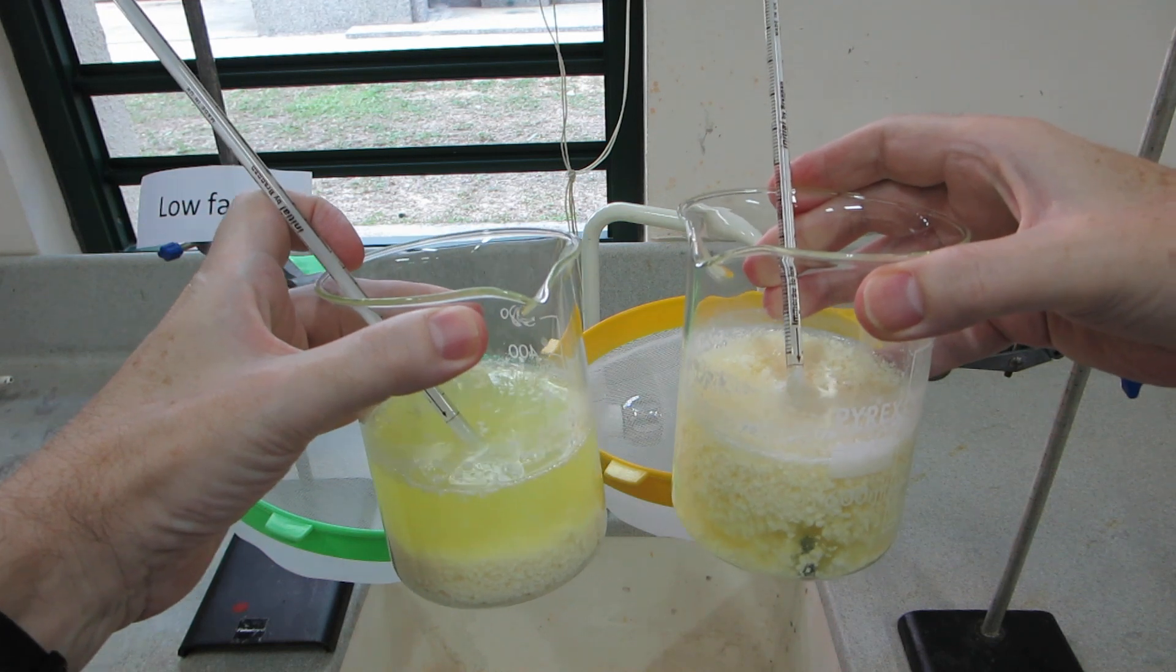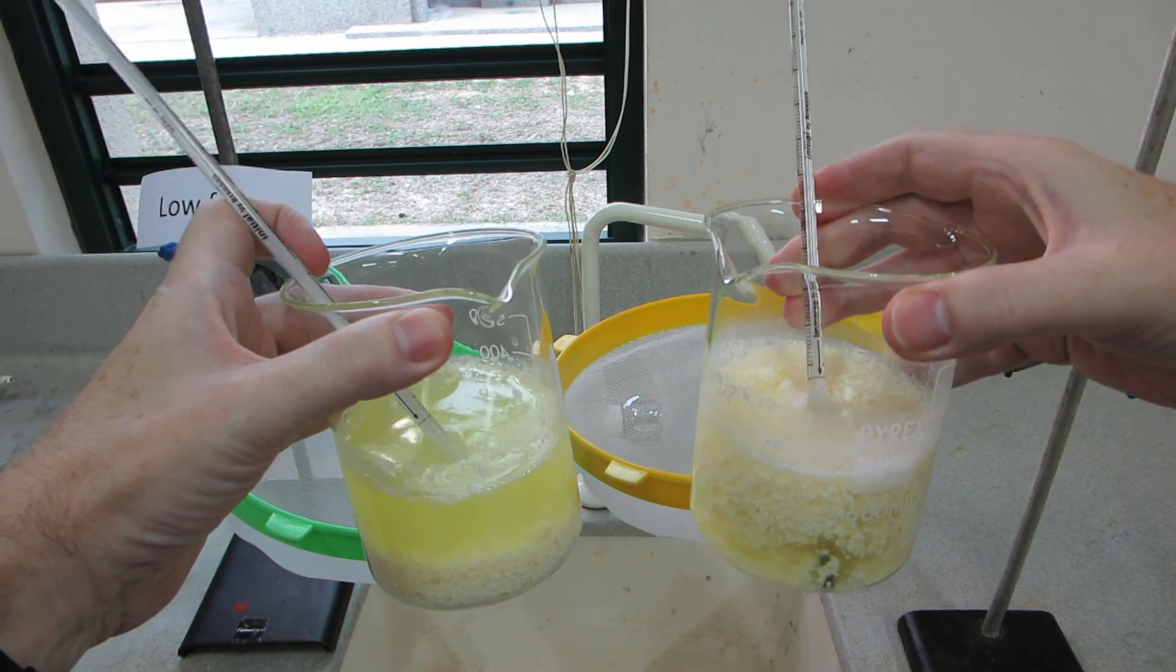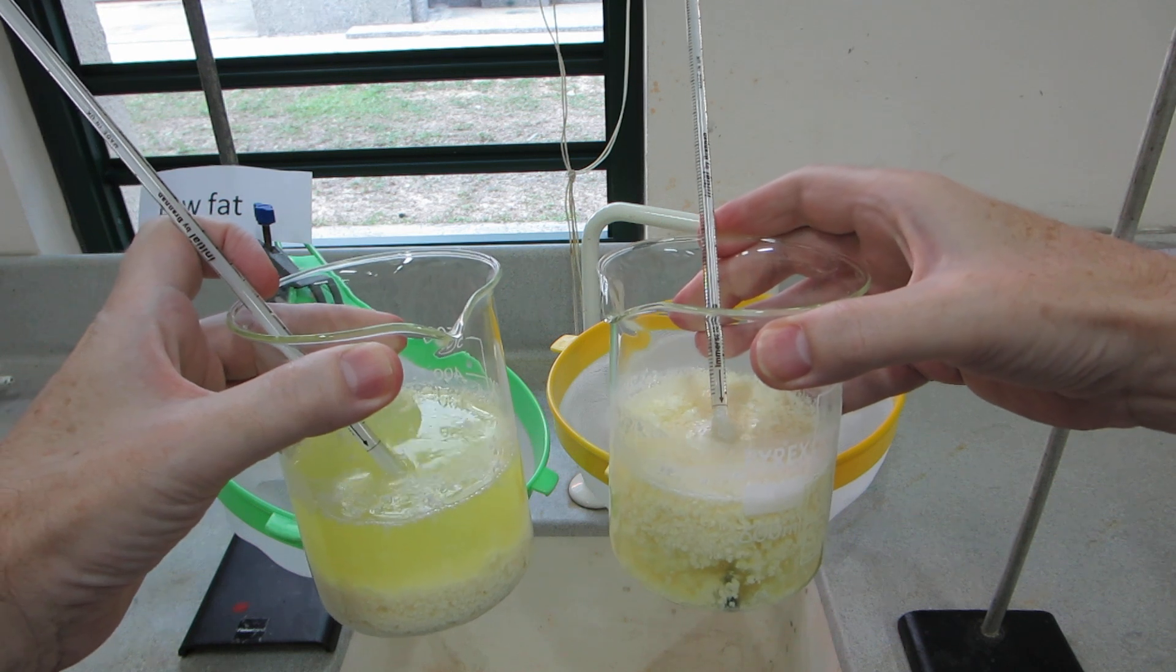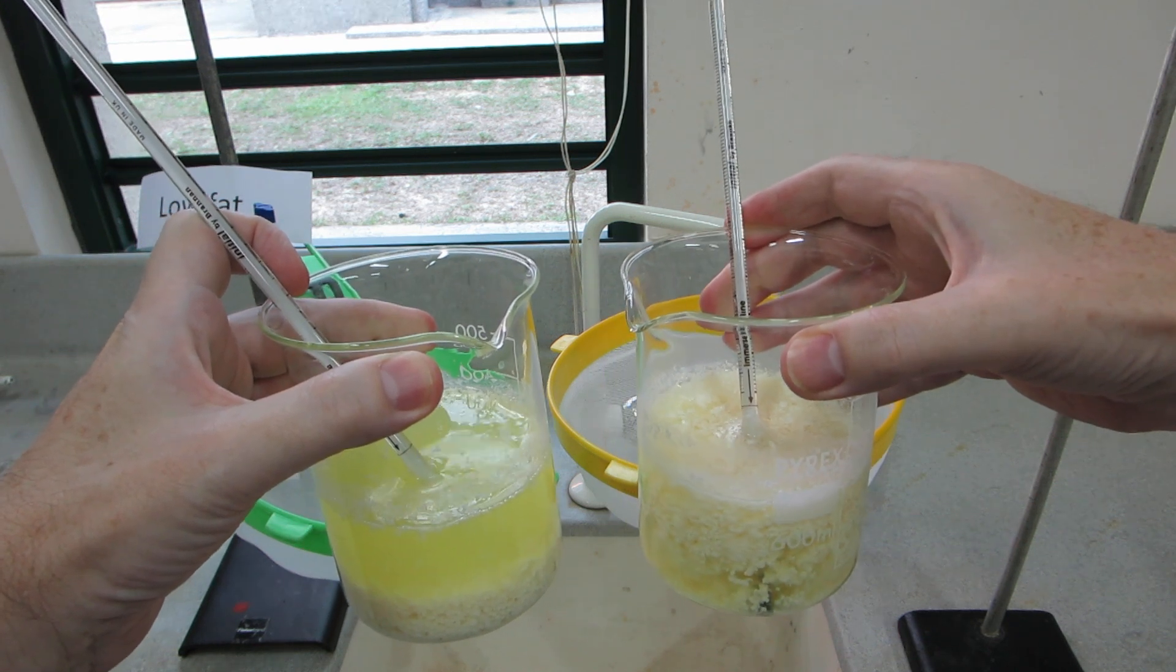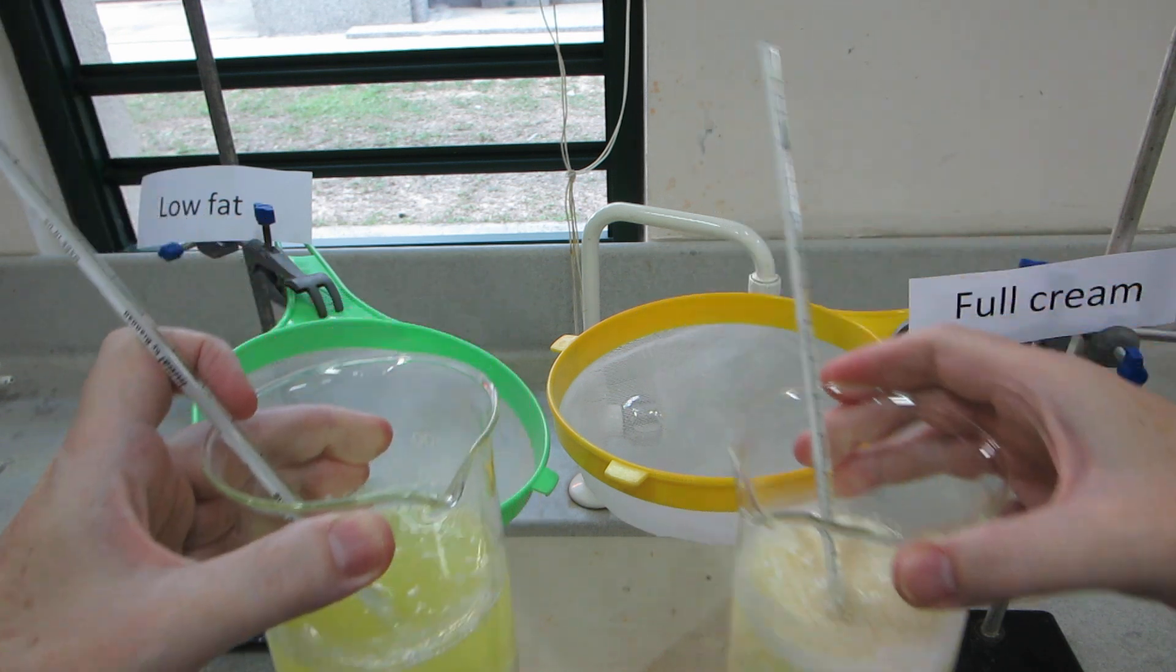You can see the solids precipitated out in the low fat milk have sunk to the bottom, whereas the solids in the full cream milk have risen to the top, and you should easily be able to discern why that is or work out why that is.